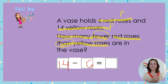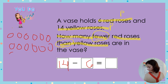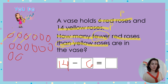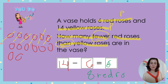Assuming you're done and the picture has been sent, let's go ahead and work through the problem to check your work. 14 minus 6 — I'm going to draw 14 circles: 1, 2, 3, 4, 5, 6, 7, 8, 9, 10, 11, 12, 13, 14. Now I'm going to take away 6: 1, 2, 3, 4, 5, 6. Let's count what's left: 1, 2, 3, 4, 5, 6, 7, 8. So 14 minus 6 equals 8. How many fewer red roses than yellow roses are in the vase? Eight red roses!